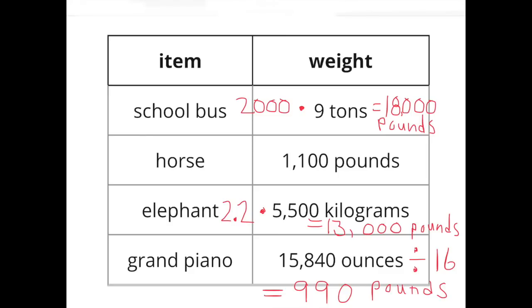Elephant, 5,500 kilograms. Multiply that by 2.2 and you get 13,000 pounds. A grand piano, 15,840 ounces. Divide that by 16 because there's 16 ounces in a pound. 15,840 divided by 16 is 990. A grand piano weighs 990 pounds.